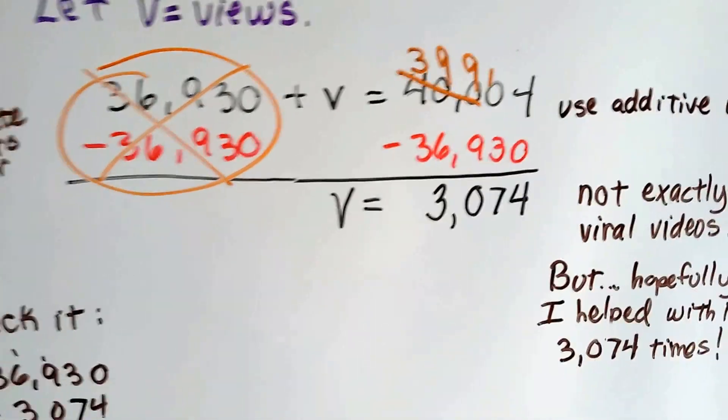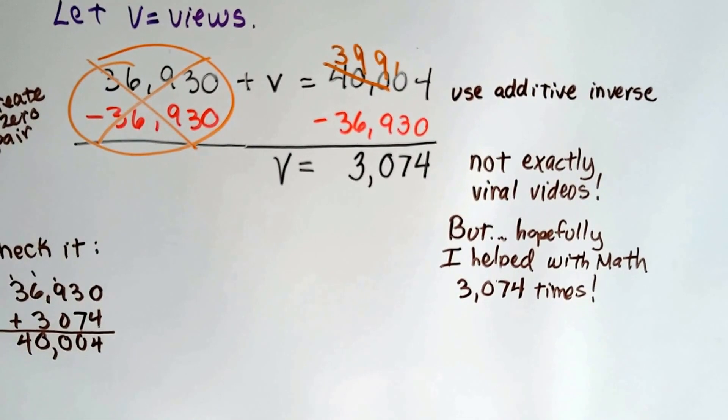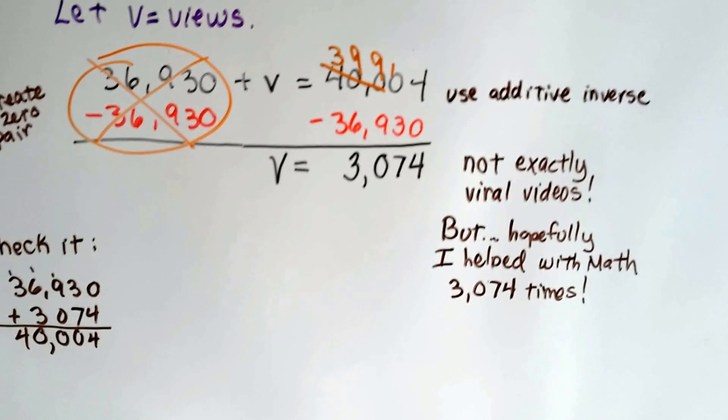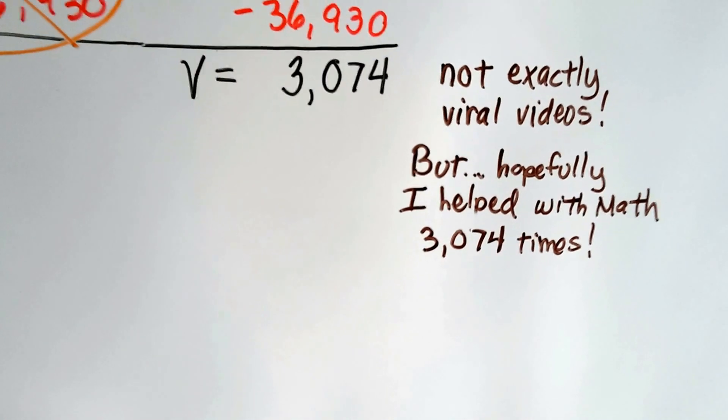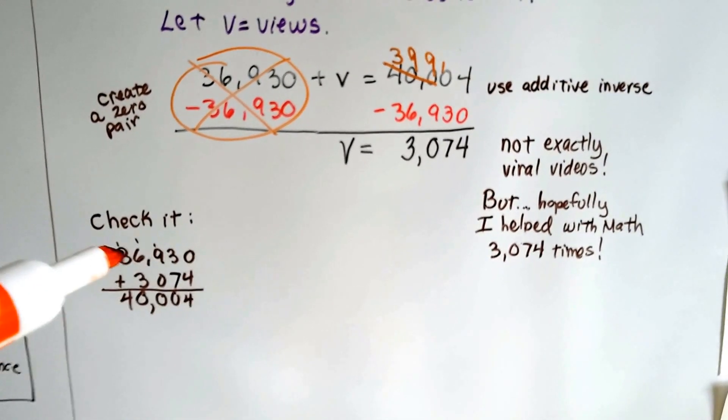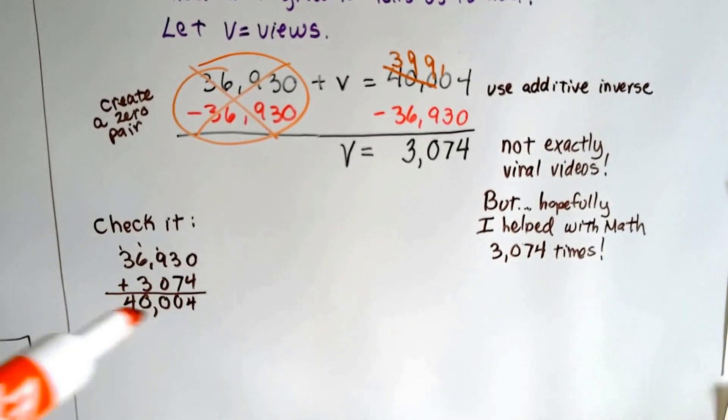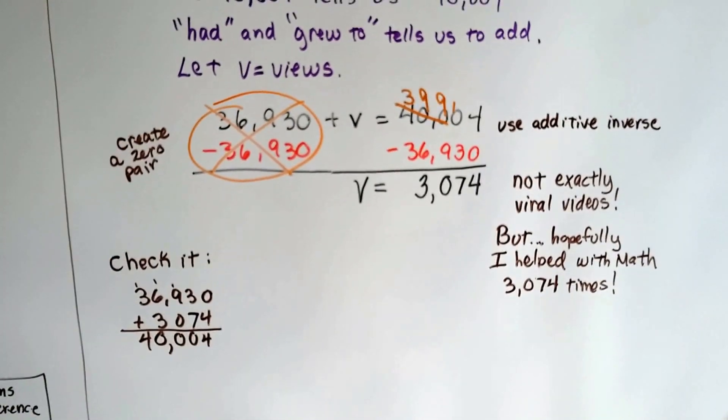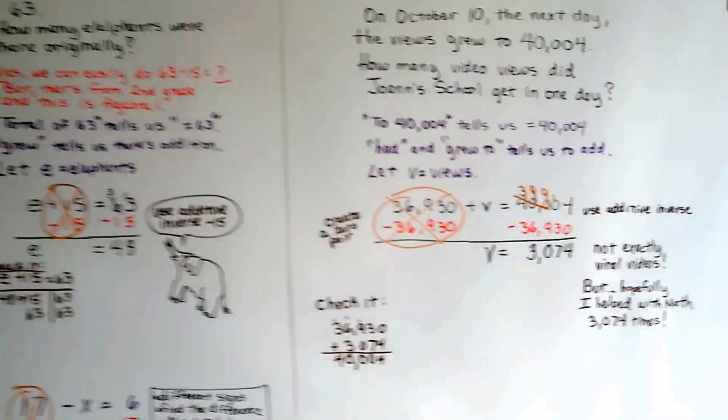And our answer is there were 3,074 views. That's not exactly viral videos, is it? It's not millions, but I hopefully helped with math 3,074 times. And that's great for me. We can check it by adding the 36,930 to the 3,074. And if it equals the 40,004, we know we did it correctly. Got to make sure we check it because we could do some bad math and make a mistake, right?